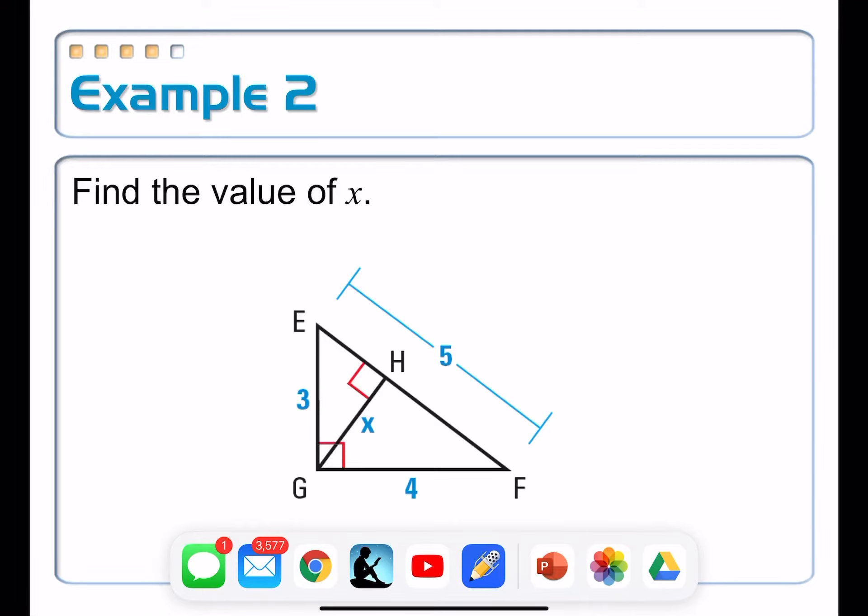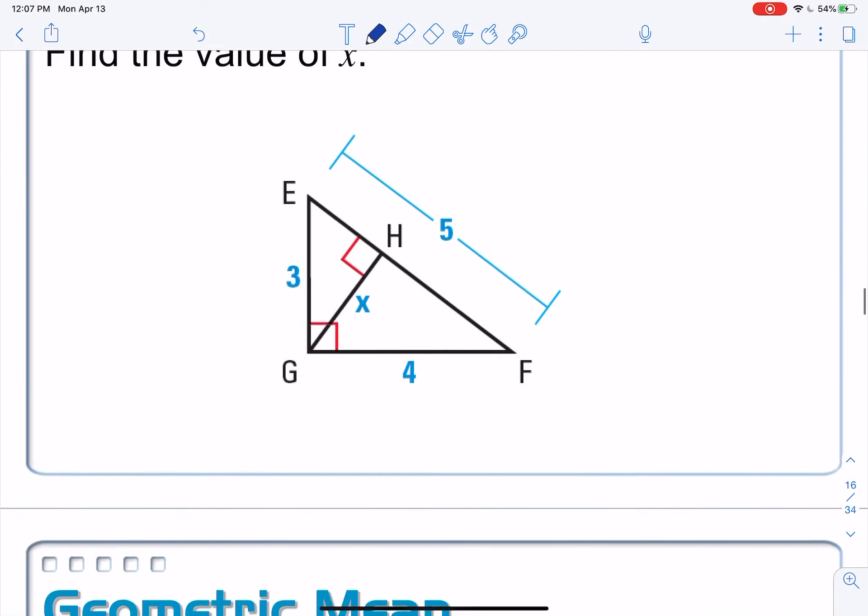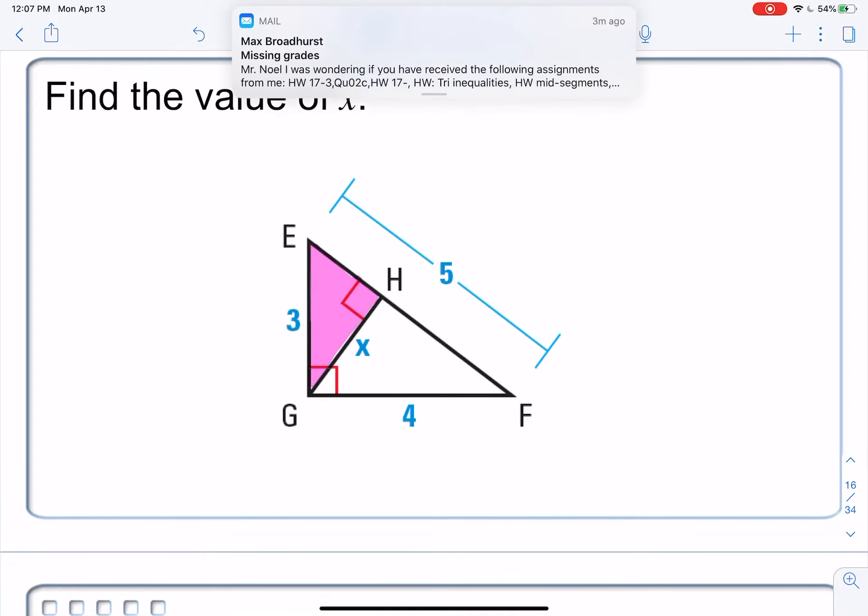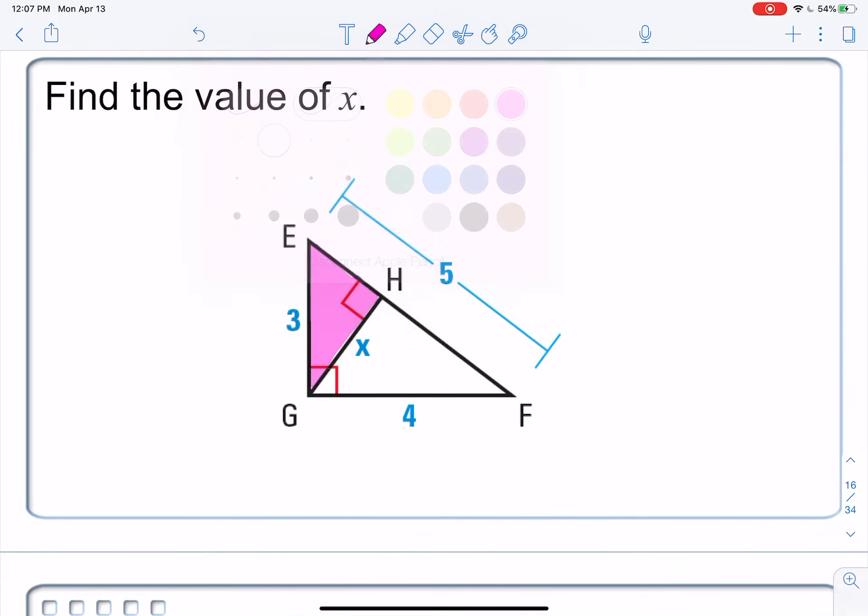So what I'm going to do is exactly what I did on the previous example. I'm just going to redraw one of the triangles. Let's say I'm going to redraw this small triangle here. I'm going to redraw it so that it matches up in the same orientation as the original one.